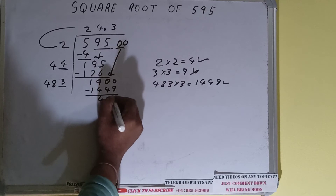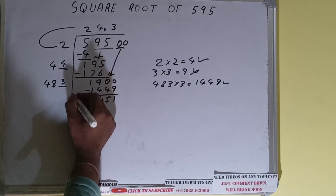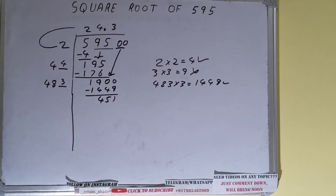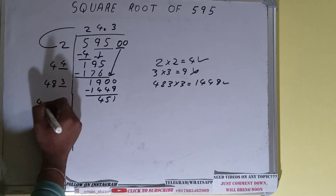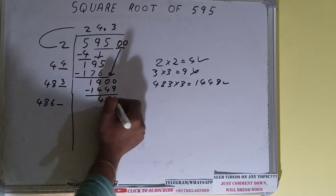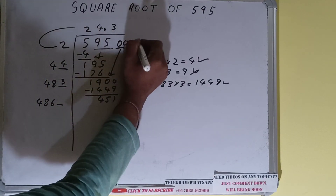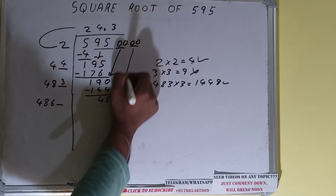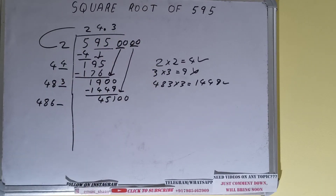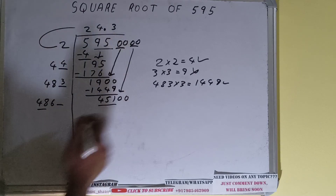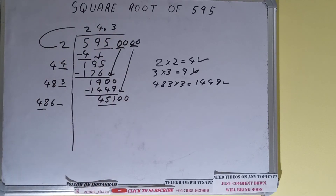451 will be left. We did 483 times 3, so add both: 483 plus 3 will be 486. Bring the next pair of zeros down and it will become 45100.